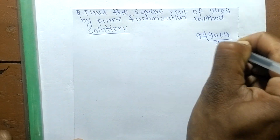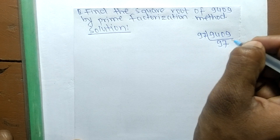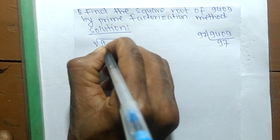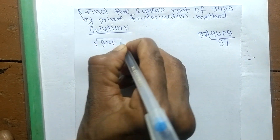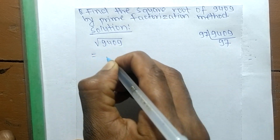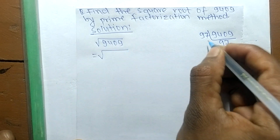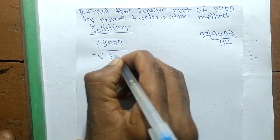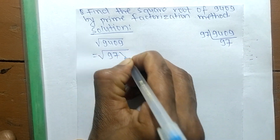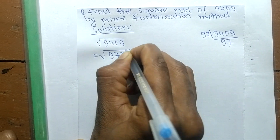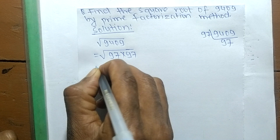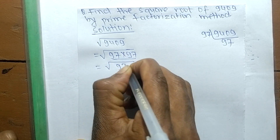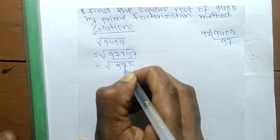So we find that the square root of 9409 equals — from this prime factorization, we can write it as 97 times 97. We make it a perfect square, so it is 97 squared.